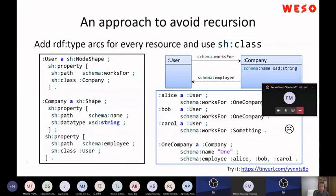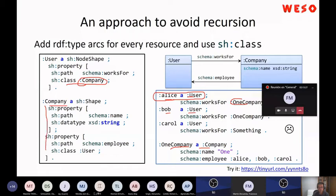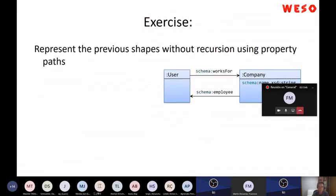There are several ways to avoid recursion. One approach is that if every node has an explicit RDF type declaration — Alice has type User, Bob has type User, etc. — then you can avoid recursion entirely. You can say that values of works-for must conform to the class Company, and being of type Company means conforming to the company shape. This way you can validate without explicit recursion, but it requires that all nodes have a discriminating RDF type, which is not always the case in practical scenarios.